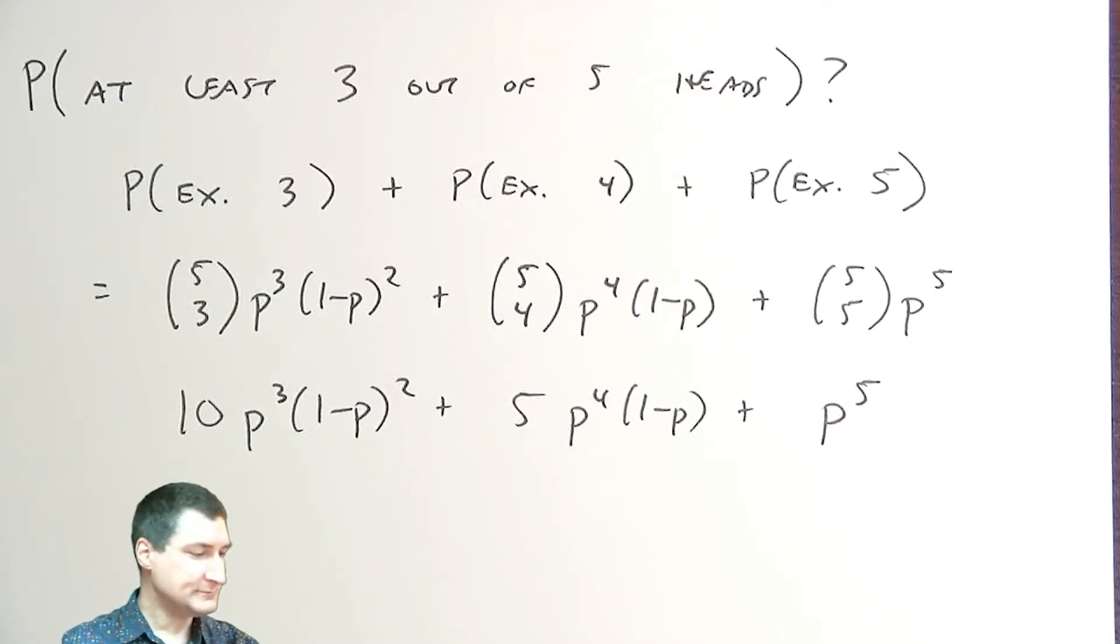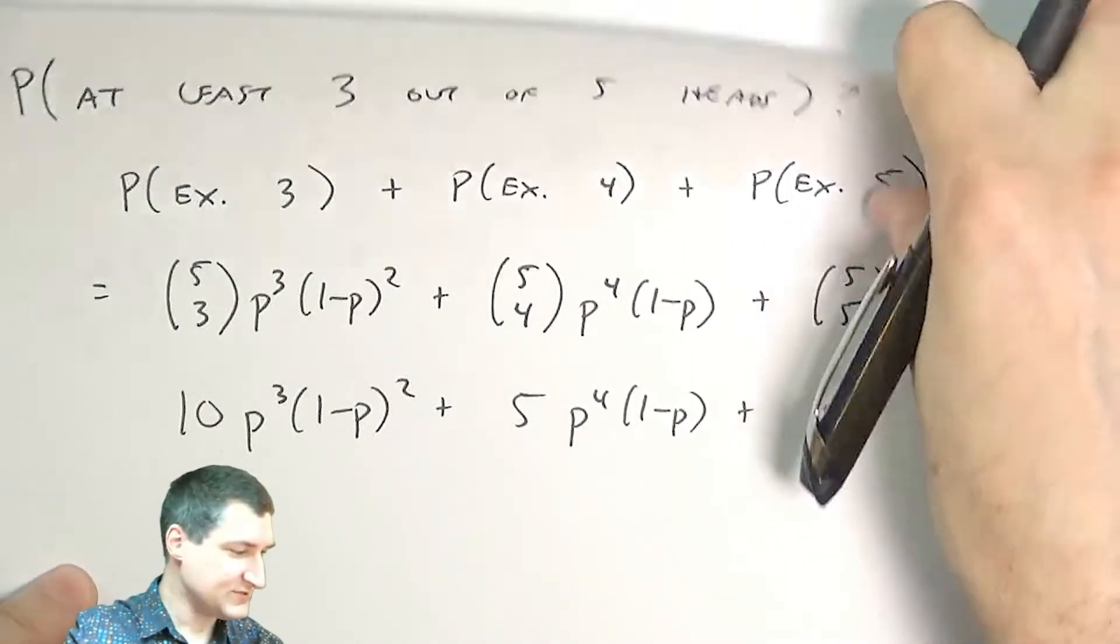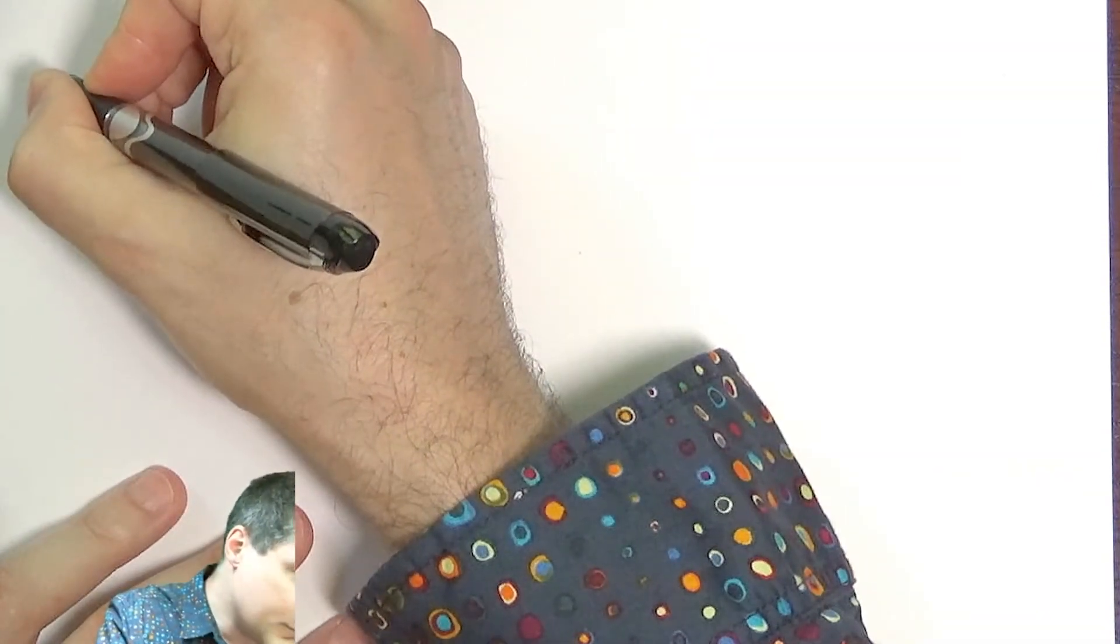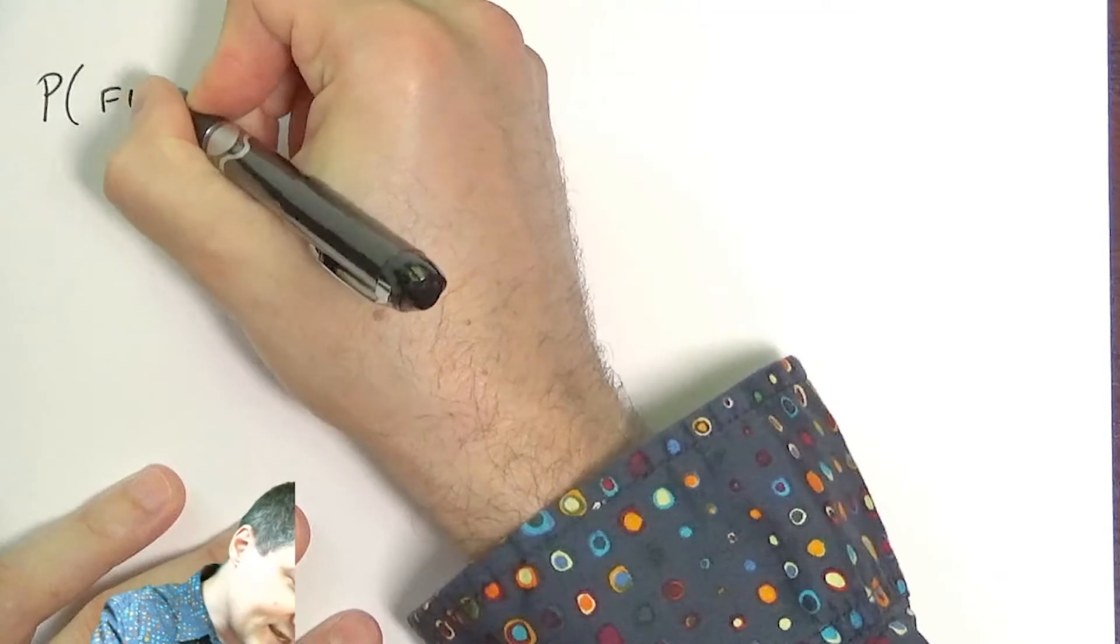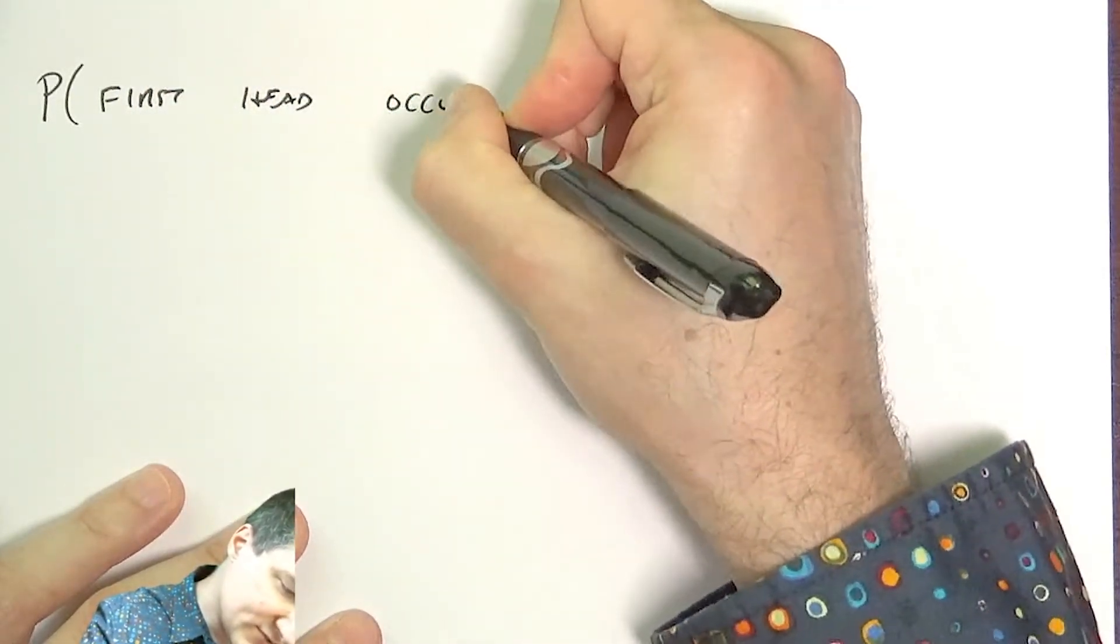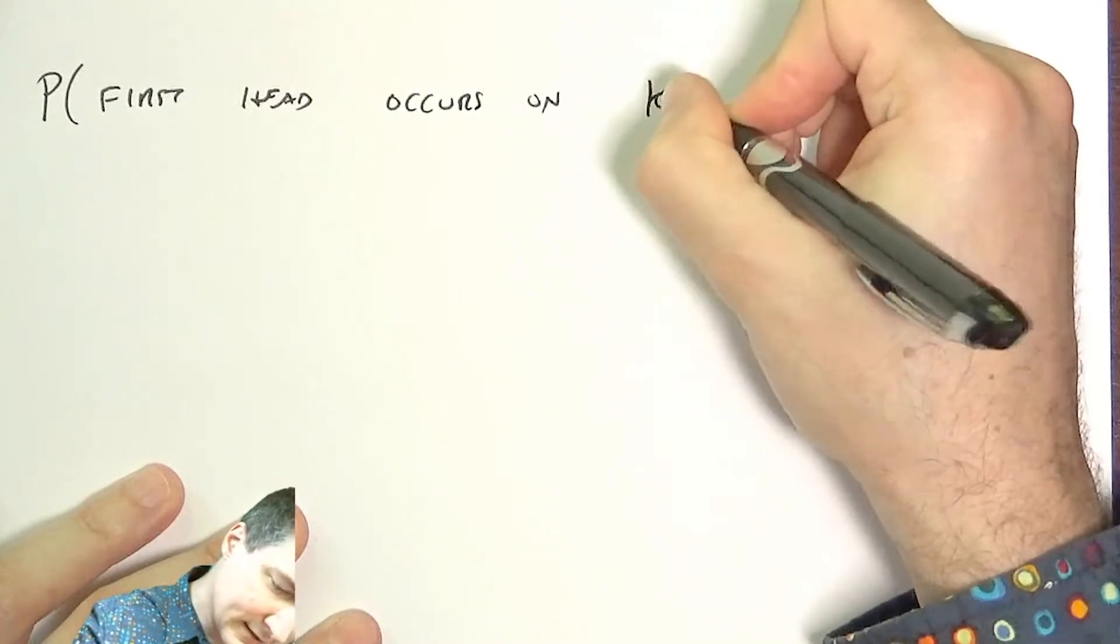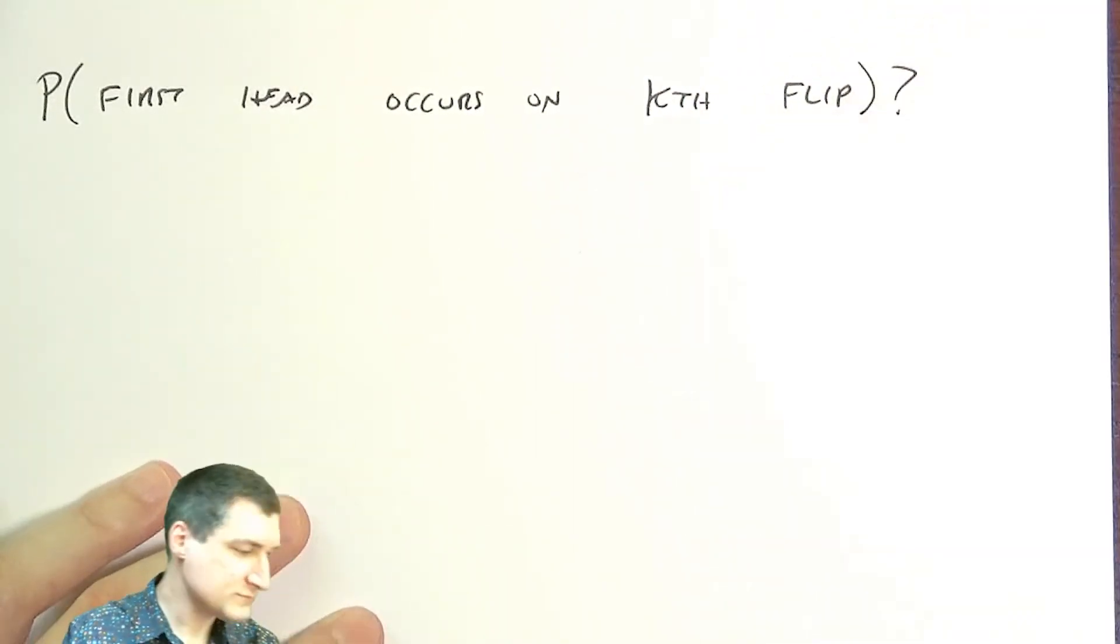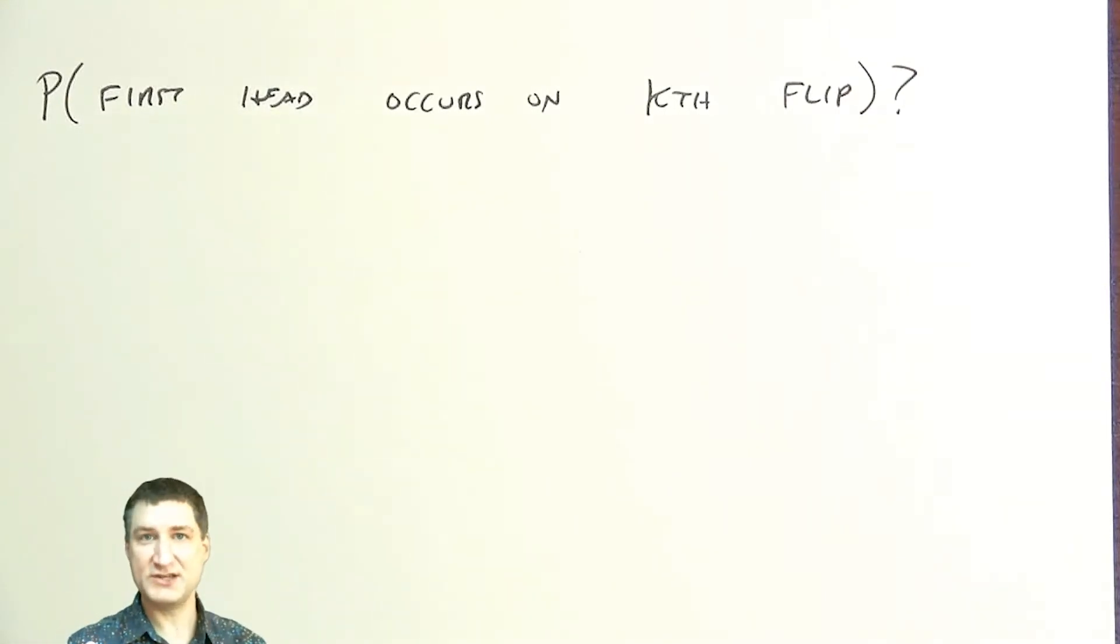Now I want to say one more thing related to an experiment where I keep on flipping the coin until something happens. I could say, what is the probability that the first head occurs on the kth flip? The sample space here is infinite. I could get a head on the first try, the second try, the hundredth try, or the millionth try, so I have lots and lots of possible outcomes.